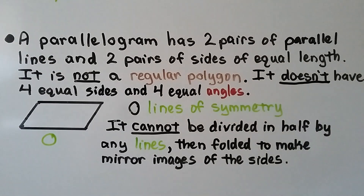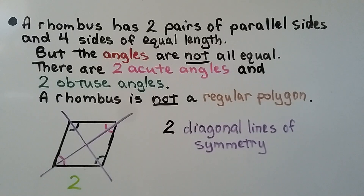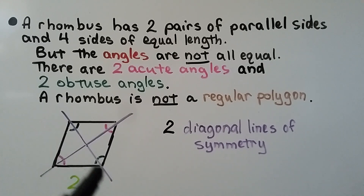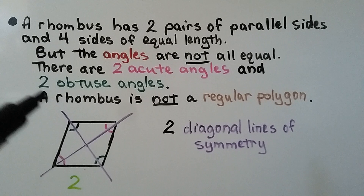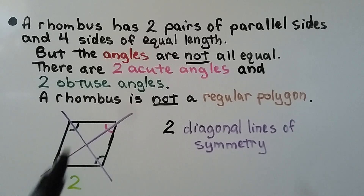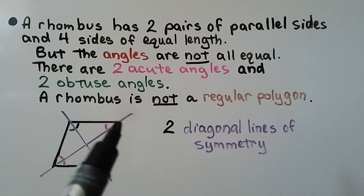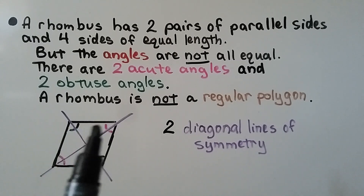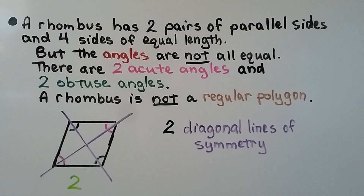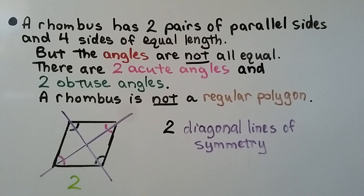A rhombus has two pairs of parallel sides and four sides of equal length, but its angles are not all equal — it has two acute angles and two obtuse angles. A rhombus is not a regular polygon. It has two diagonal lines of symmetry. A vertical or horizontal fold won't work because the vertices would end up out of alignment.